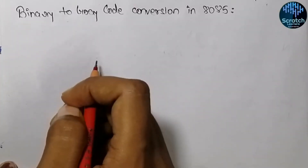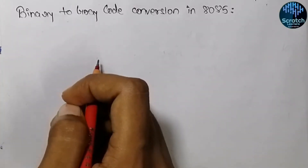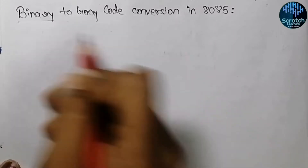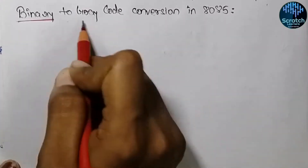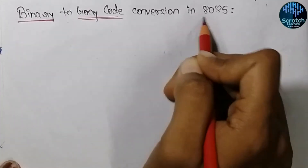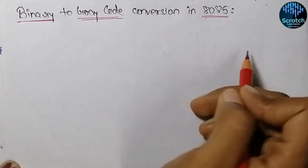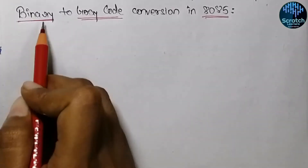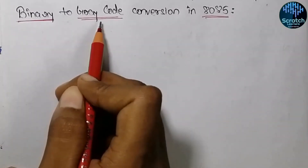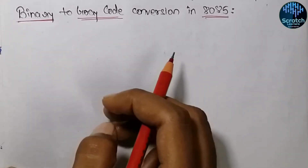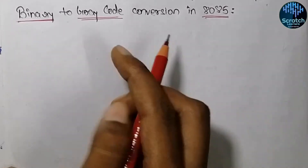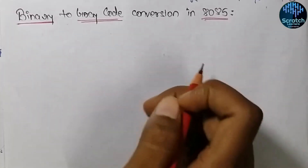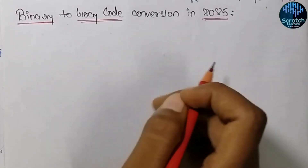Hello everyone and welcome back to our YouTube channel. In this video, we will see the assembly language program to convert binary code into grey code in the 8085 microprocessor. We all know how to convert binary code into grey code in normal binary format, but how we will do that in the 8085 microprocessor. So let's start with the video.